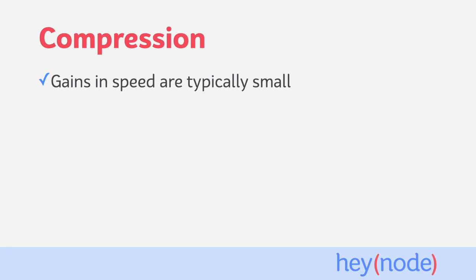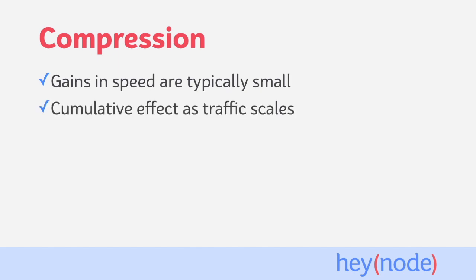The gains in speed from compression for any given request are typically small. The client may save just a few hundred milliseconds of load time on average. That being said, there's a cumulative effect as traffic scales up, and compression is a straightforward way to save plenty of bandwidth.